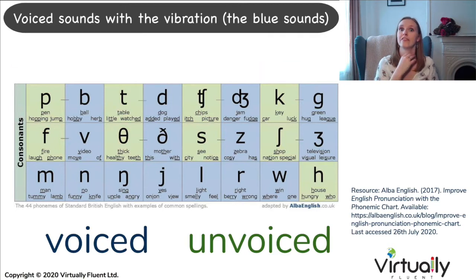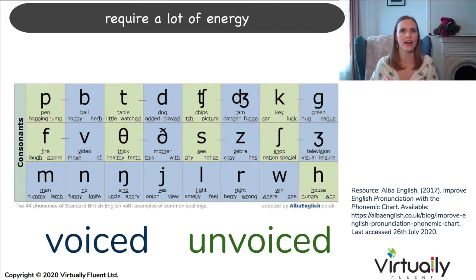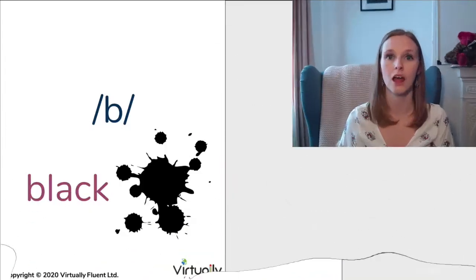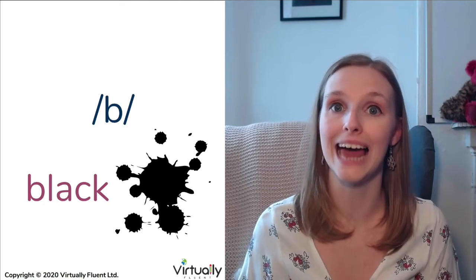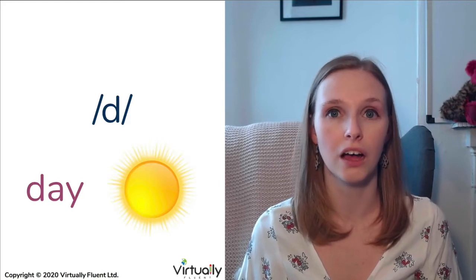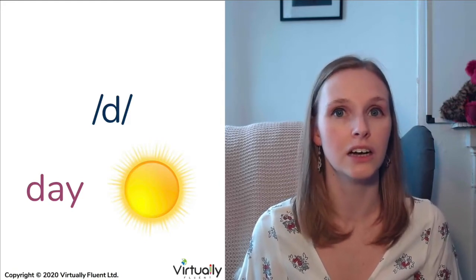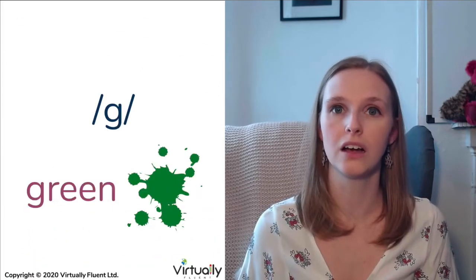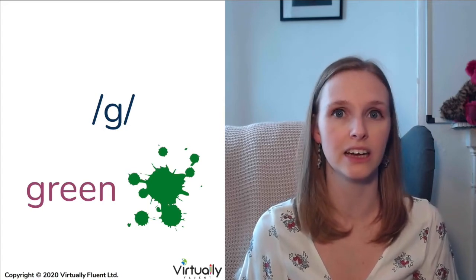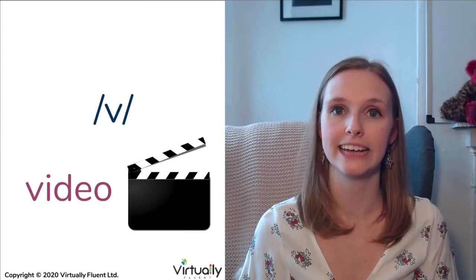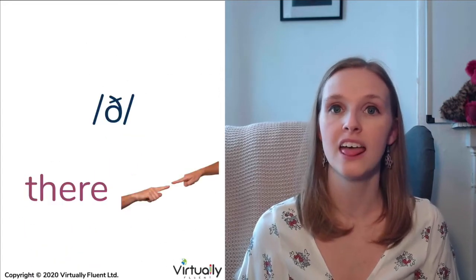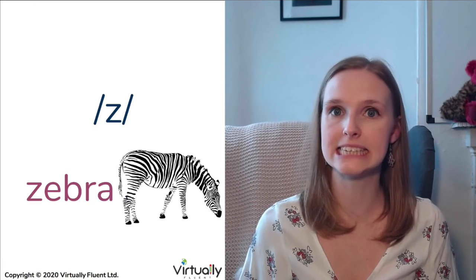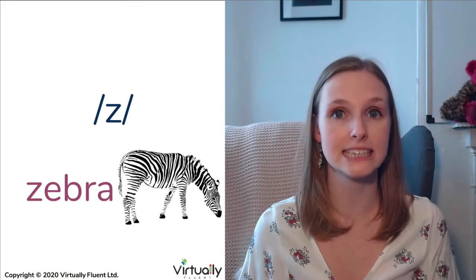Voiced sounds with the vibration — the blue sounds — require a lot of energy and they are very dominant sounds in English. Let's start with those: B, like in black; D, like in day; J, like in jam; G, like in green; V, like in video; TH, like in there; Z, like in zebra.